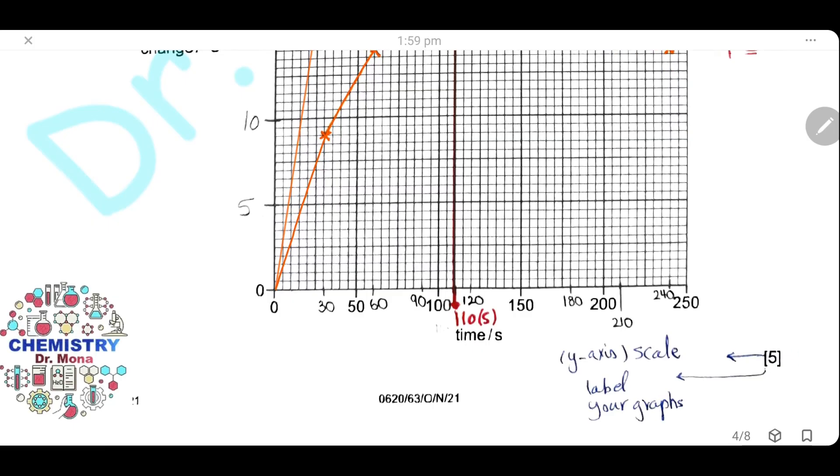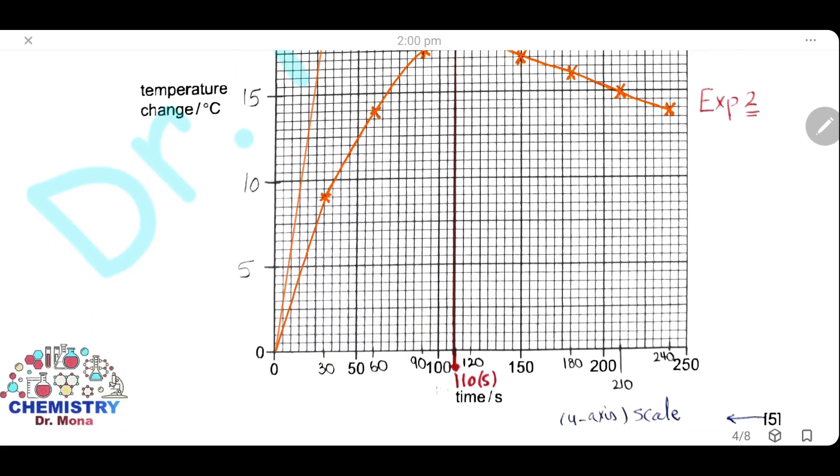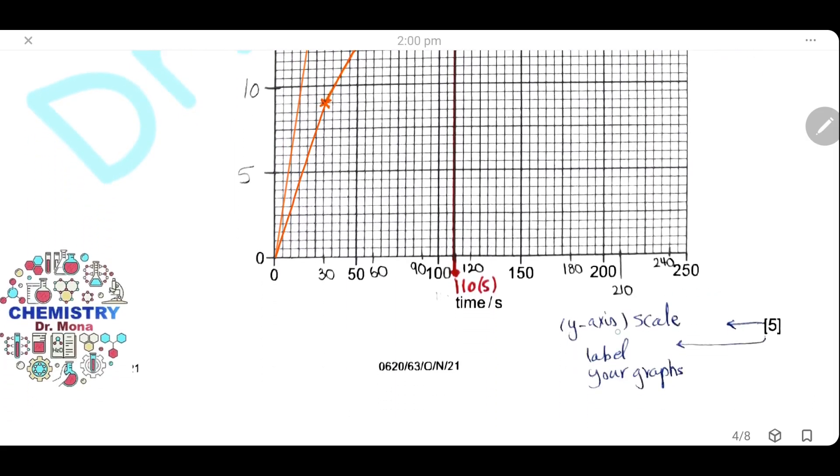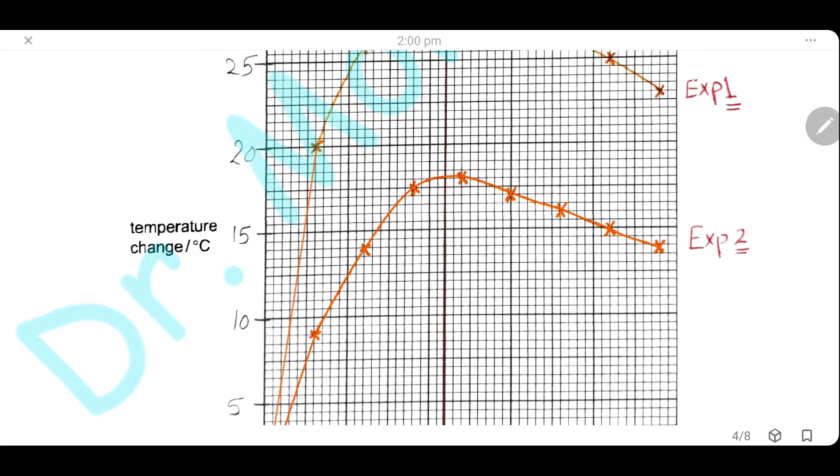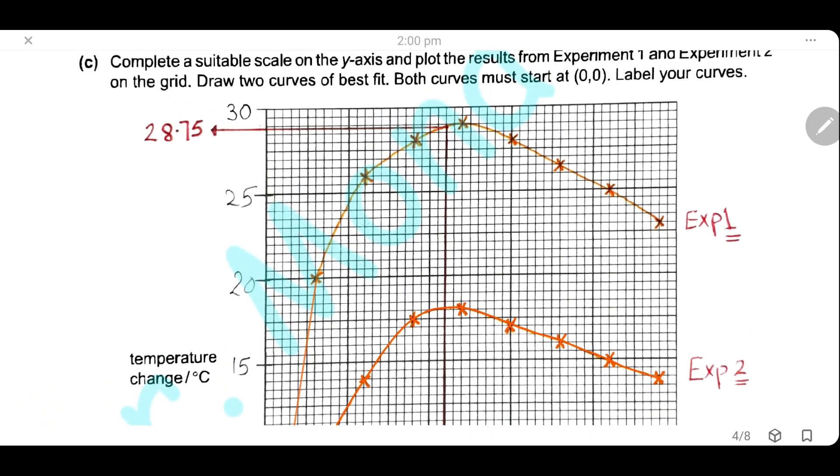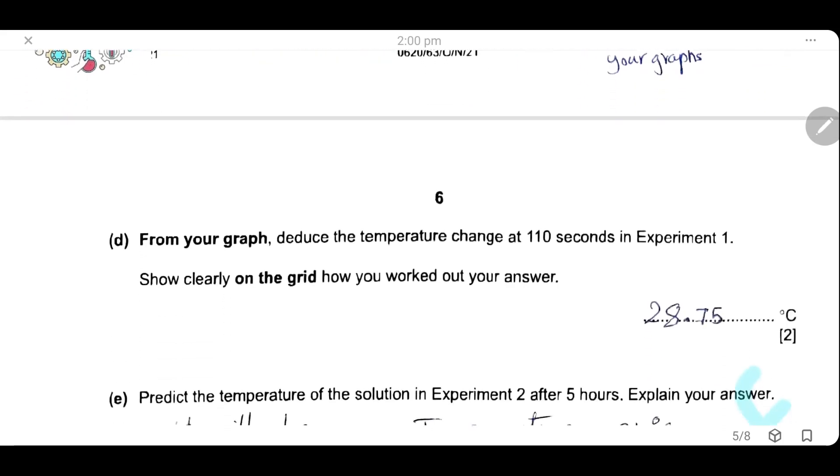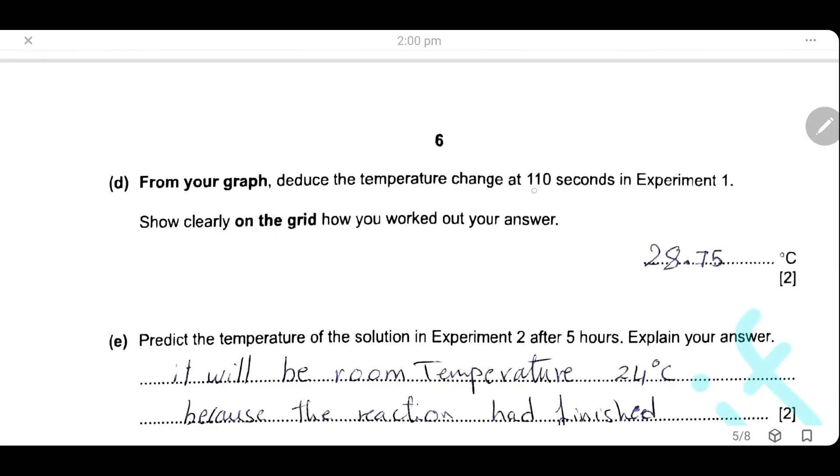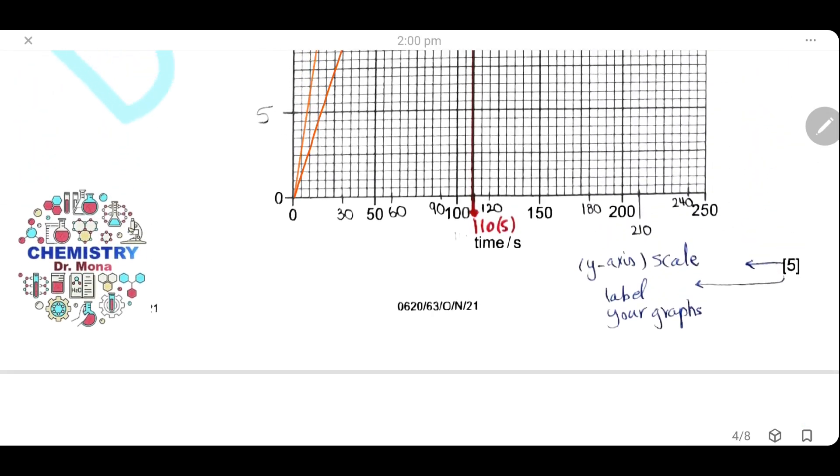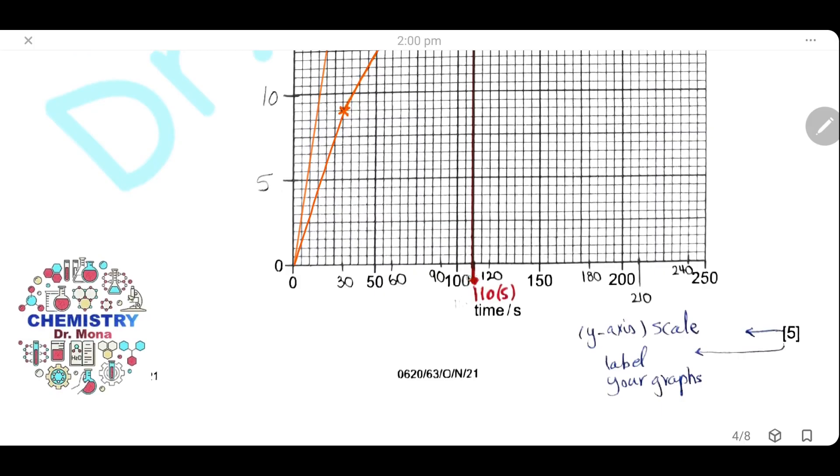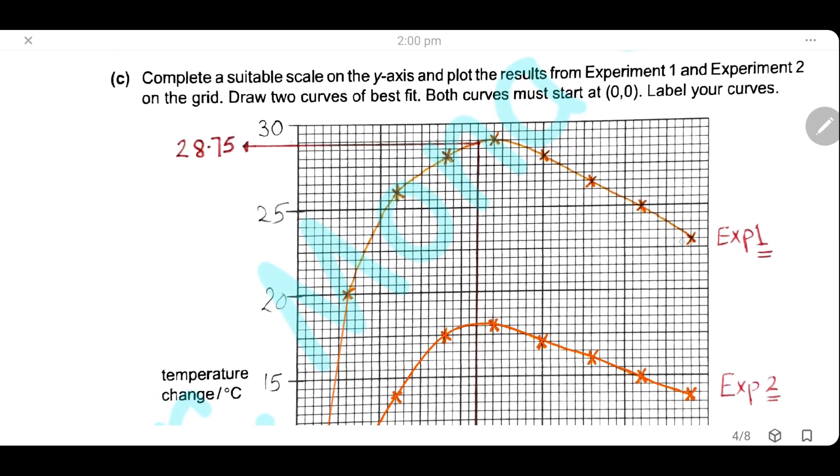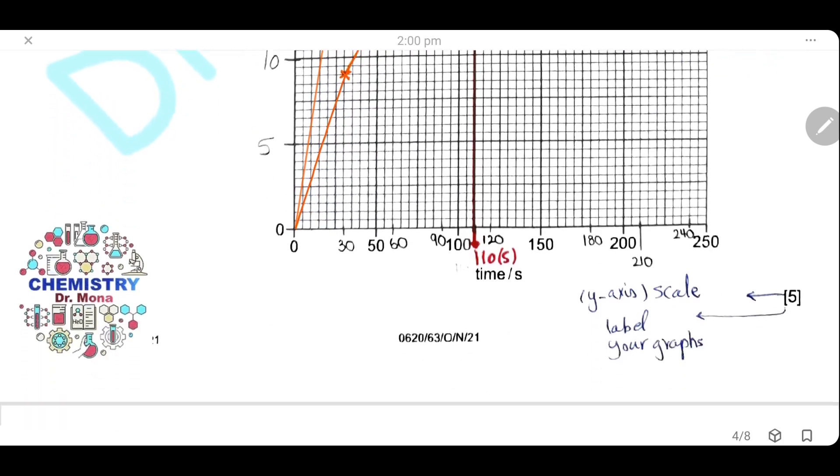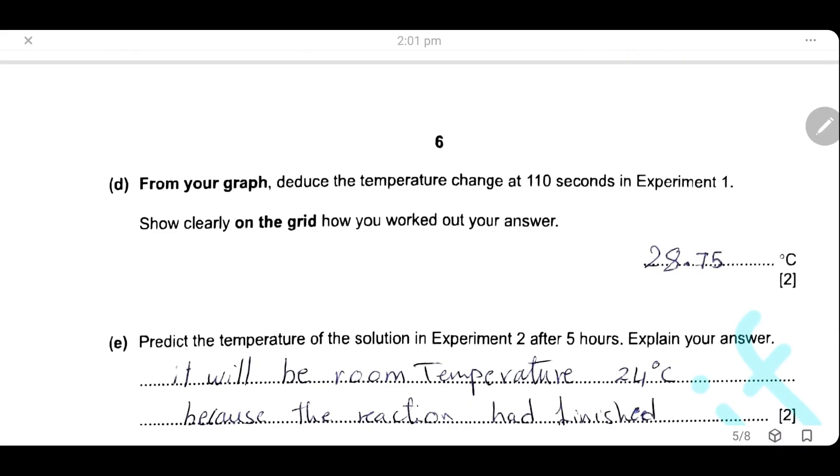Here, you have five marks for this curve: two marks for all points correctly plotted, one mark for the scale of the y-axis, another mark for labeling your graph, and the fifth mark for the smooth curves. From your graph, deduce the temperature change at 110 seconds in experiment 1. Show clearly on the grid how you work out your answer. We will go back to our curve. Here, at the position of 110 seconds, we will go upward until we meet the curve for experiment 1, showing temperature difference between 28.5 and 29, so the reading will be 28.75°C. You have to show your work on the grid.